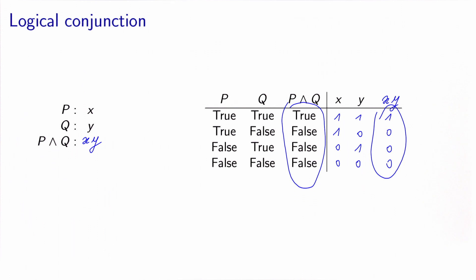When we use constraints, it's not necessary to multiply the two conditions, because all the constraints of an optimization problem have to be verified — we can keep them separate in the formulation. However, if x is a variable and y is data, which is constant, then we can use this formulation.